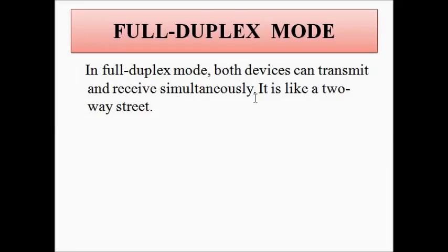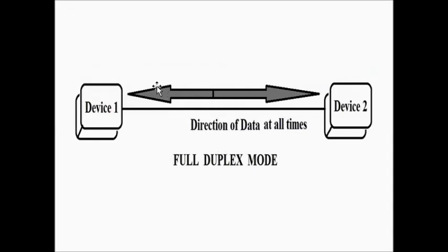In full duplex mode, both devices can transmit and receive simultaneously — it is like a two-way street. A popular example is the telephonic conversation over a mobile phone. You can speak at any time and interrupt the other person without waiting for them to finish. Both devices can send and receive data at the same time, with data flowing in both directions simultaneously between the two devices.